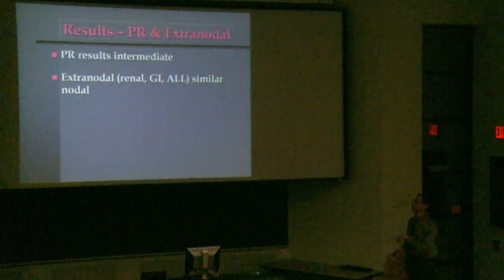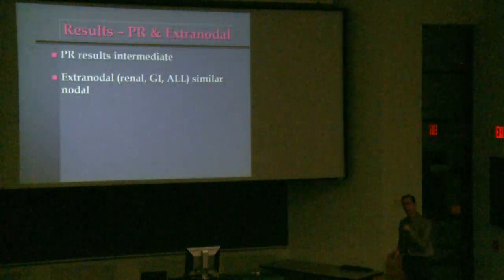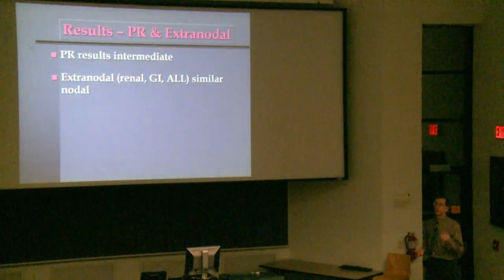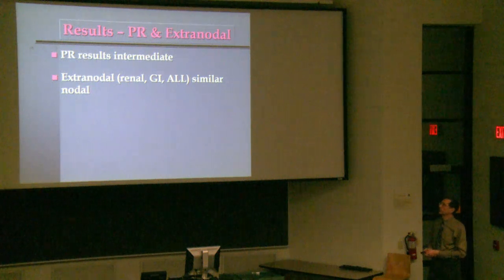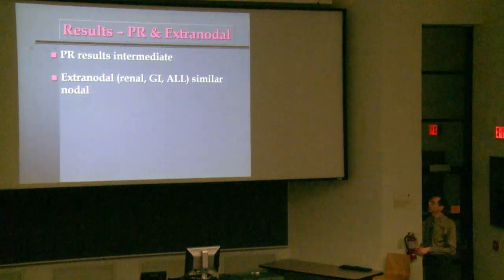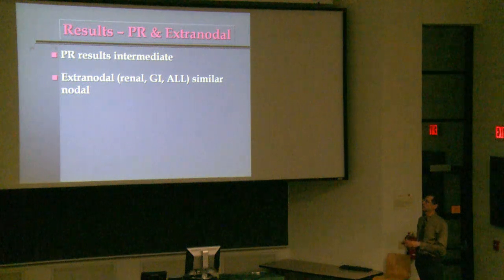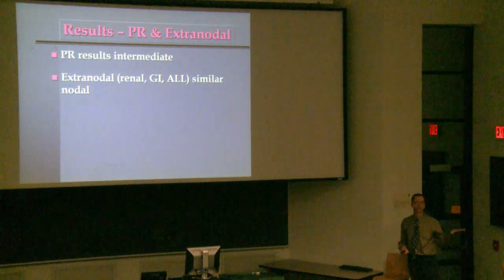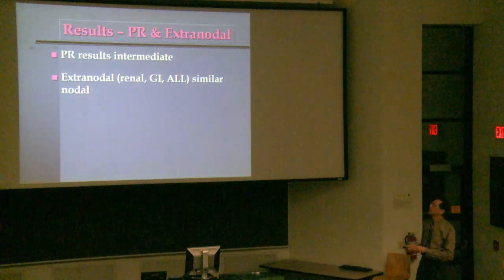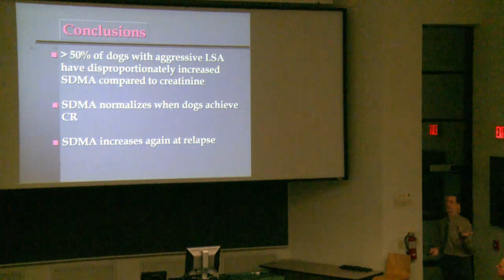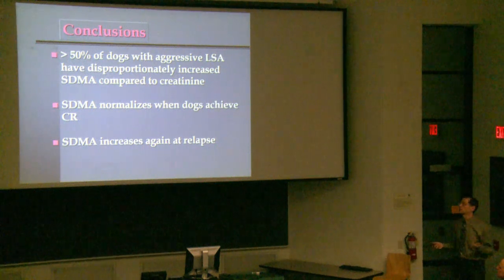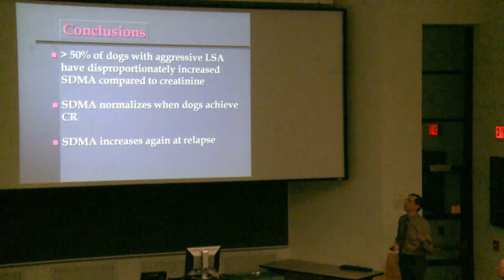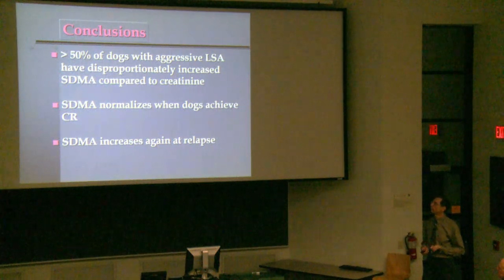Dogs in partial remission had intermediate SDMA values, as expected. Several dogs with extranodal lymphoma — two with renal, two with GI, one with acute lymphoblastic leukemia — showed essentially the same results as nodal lymphoma. In conclusion, over 50% (conservatively, likely closer to 70%) of dogs with aggressive lymphoma have a disproportionately elevated SDMA compared to creatinine. When dogs achieve complete remission, SDMA normalizes, and when they relapse, it goes back up.